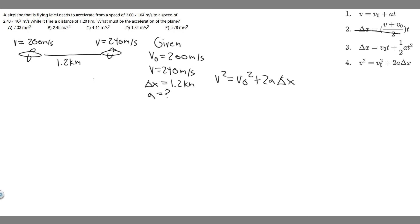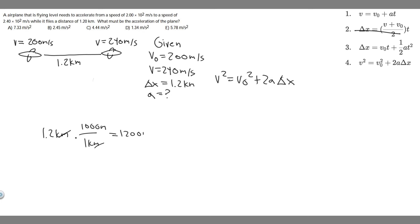Before plugging in, we need to make sure our units line up. The velocities are in meters per second, so we need distance in meters. Our delta x is in kilometers, so we need to convert. For every 1 kilometer there are 1,000 meters, so 1.2 kilometers times 1,000 gives us 1,200 meters. So delta x is 1,200 meters.